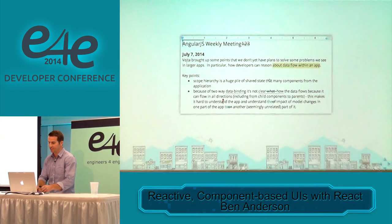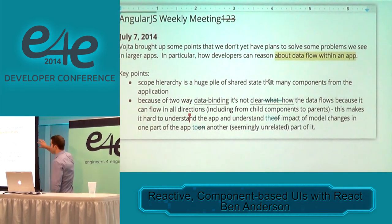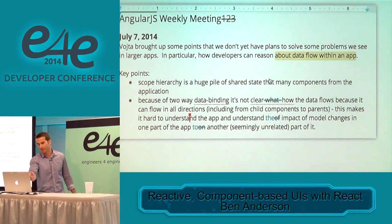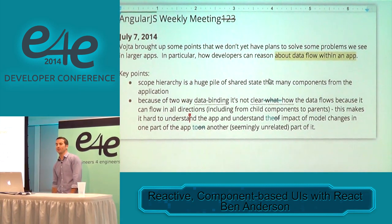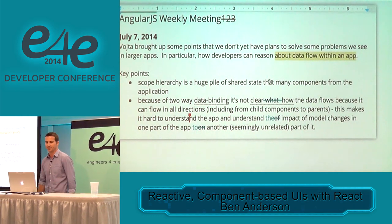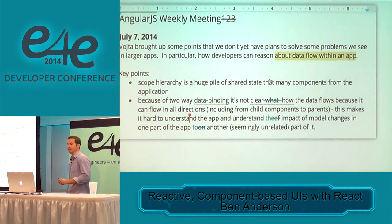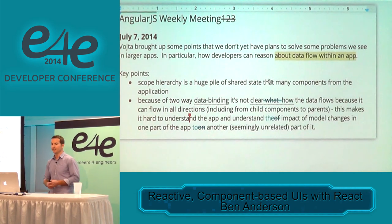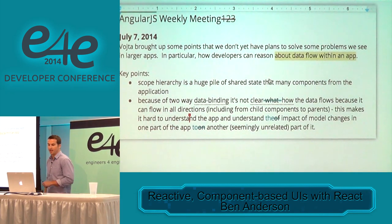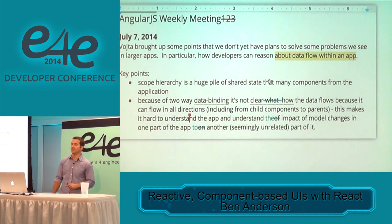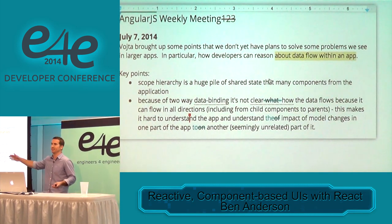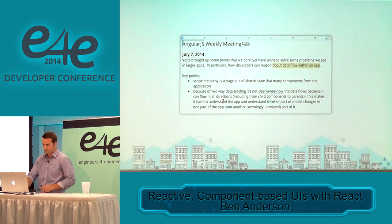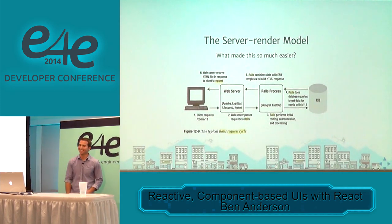Every week the Angular core team has a meeting to talk about the problems they're trying to solve. In one meeting, one of the core developers brought up some points: they don't yet have plans to solve some problems they see in large applications. In particular, how developers can reason about data flow within the application. Scope is a huge pile of shared state all over the application. Because of two-way data binding, it's not clear how data flows because it can flow in all directions. This makes it hard to understand the application and the impact of model changes in one part of the app on a seemingly unrelated other part. Those guys know what they're talking about — they've been there.